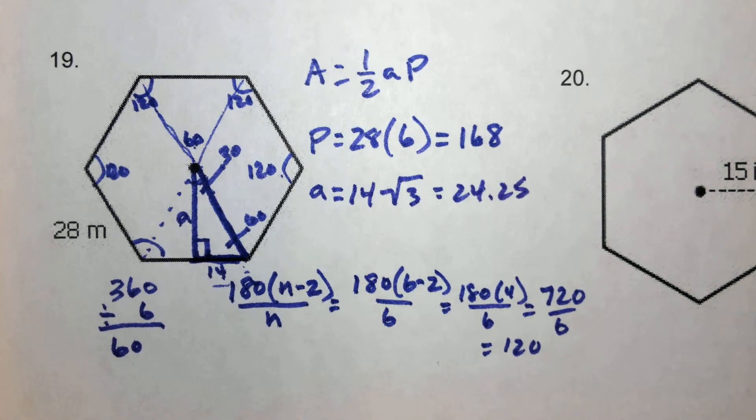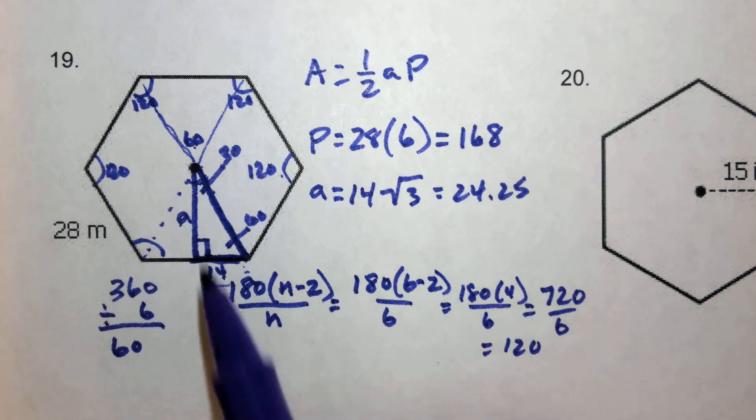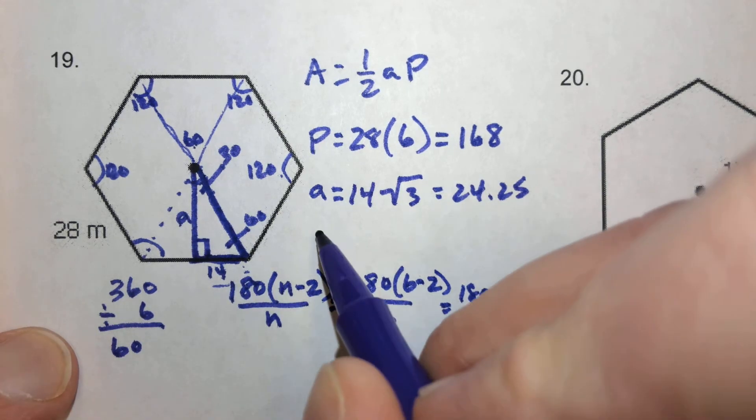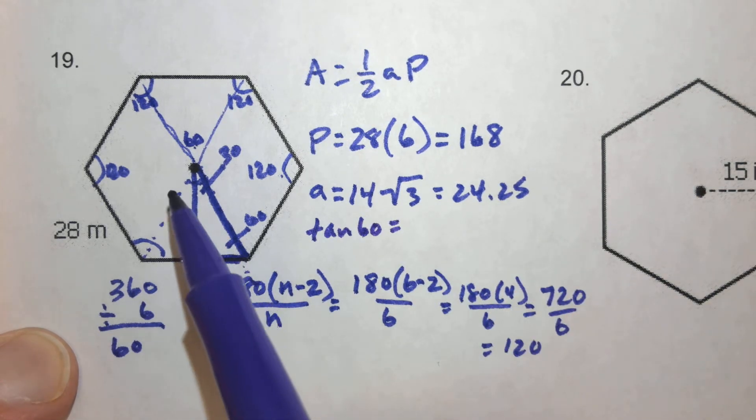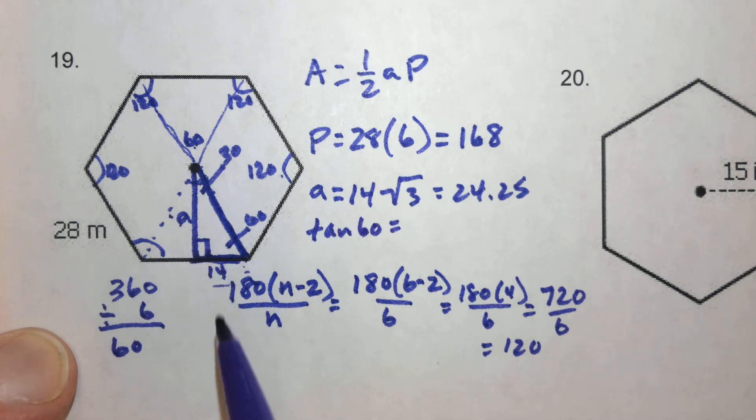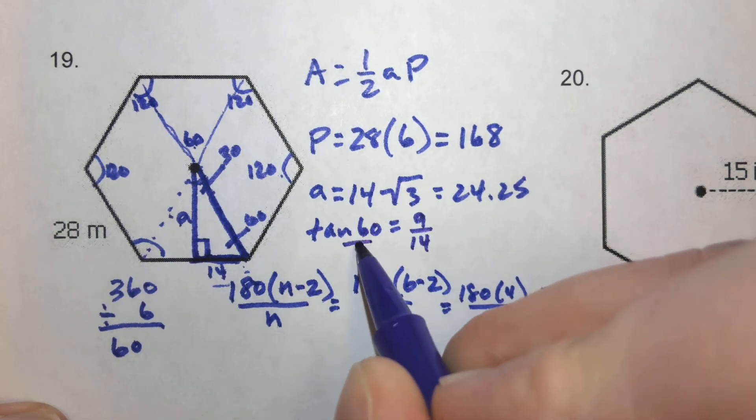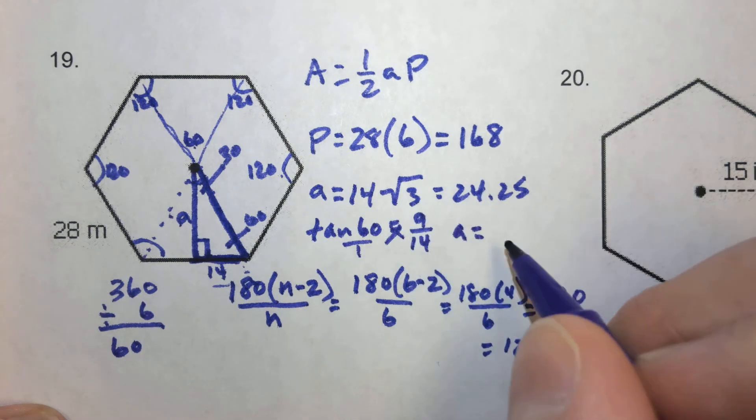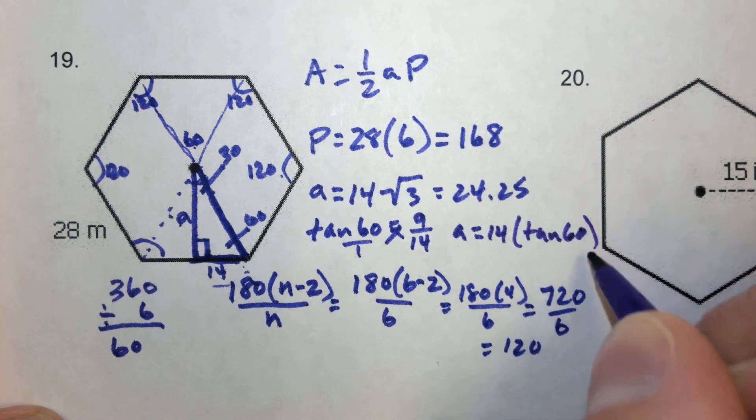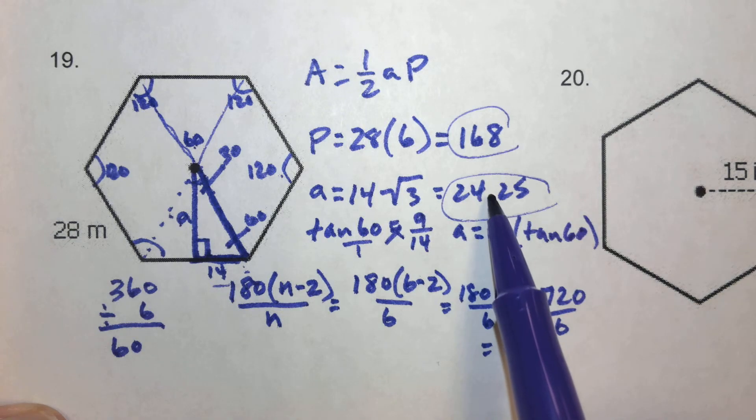Now if you can't remember that shortcut, that's perfectly fine. You can also use trigonometry to solve that problem. You could take the tangent of the 60-degree angle or the tangent of the 30-degree angle. Either way, your ratio would just be opposite. You can take the tangent of the 60-degree angle, and that's going to be equal to the ratio of the opposite leg over the adjacent leg. We're using tangent because we're just using the legs of the triangle. That would be A over 14. When we cross-multiply, we get that our apothem is equal to 14 times the tangent of 60, which is going to give you exactly the same answer of 24.25.